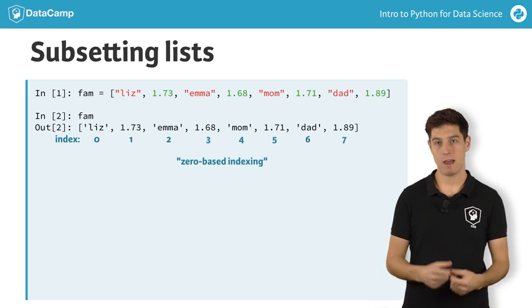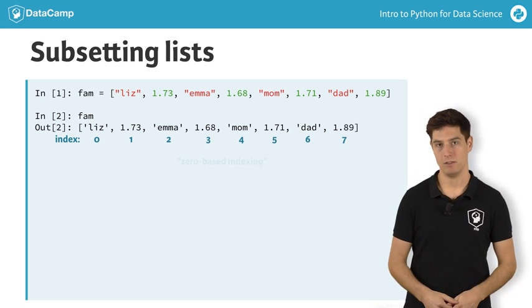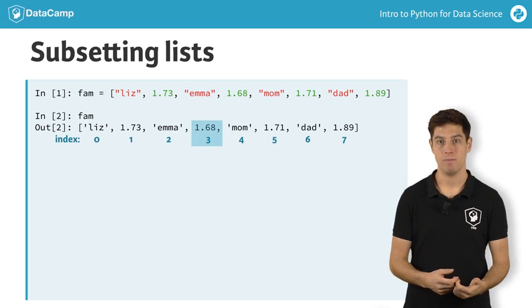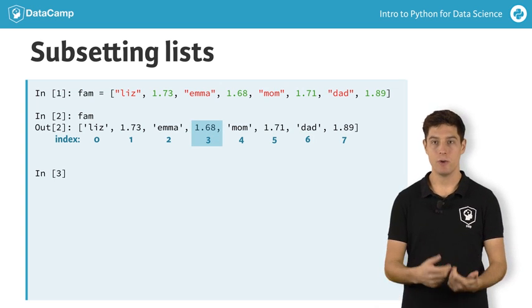Suppose that you want to select the height of emma, so the float 1.68. It's the fourth element, so it has index 3. To select it, you use 3 inside square brackets.